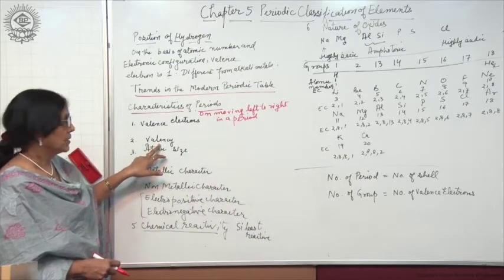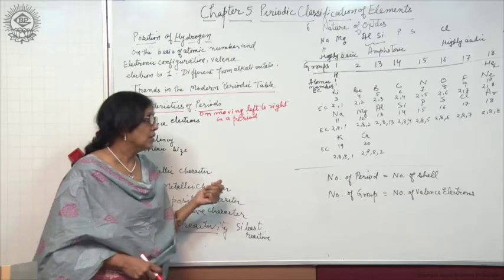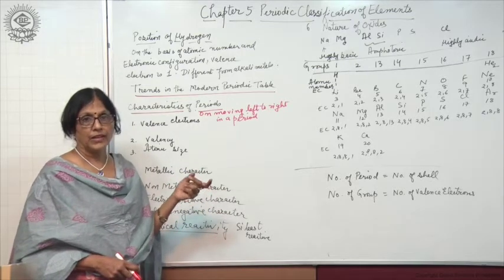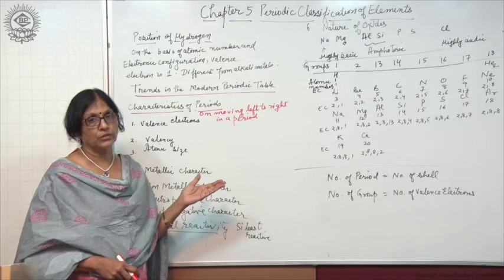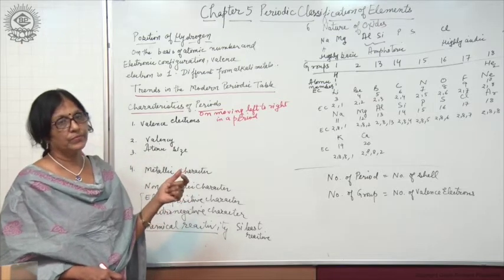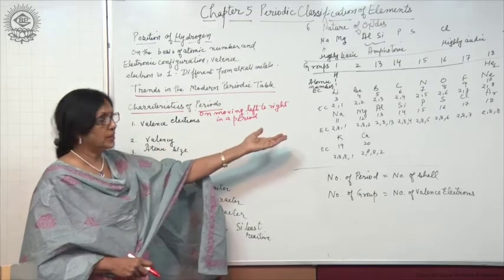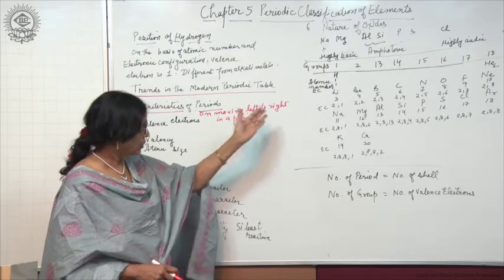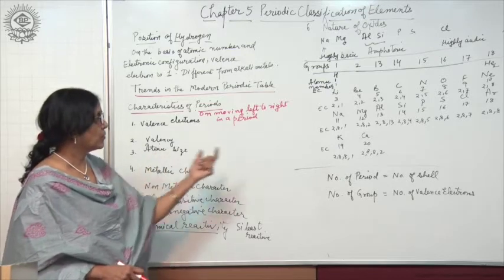Now let us look at valency. How do we find out the valency? When the number of valency electrons is 1, 2, or 3, the valency is equal to the number of valency electrons. But when the number of valency electrons is from 4 to 8, valency can be found by subtracting the valency electrons from 8. You can find out the valency yourself.